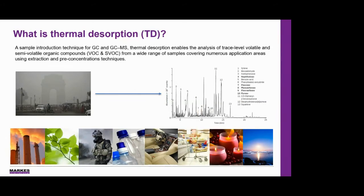The most common sampling method uses a sorbent tube where a volume of air can be taken onto the sorbents inside, trapping the compounds of interest. Alternatively, samples can be taken via canisters or directly onto the focusing trap for online samples. In addition to this, direct desorption can be performed where a small amount of sample is placed directly into an empty tube and heated to release the VOCs directly into the system.